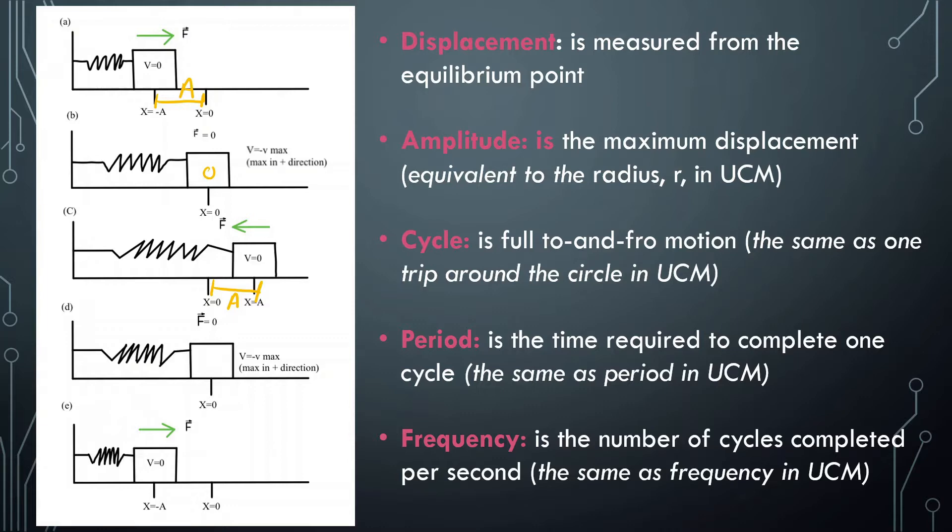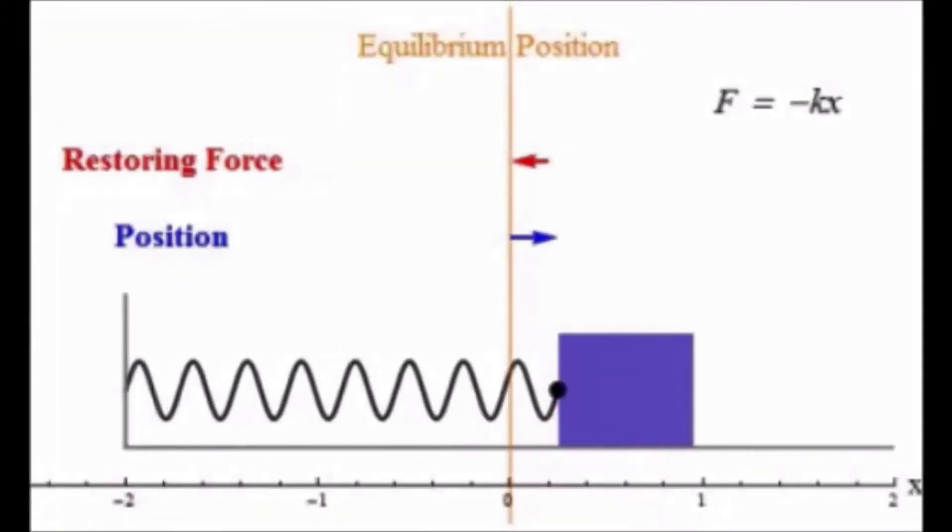Cycle is full to and fro motion, the same as one trip around the circle in uniform circular motion. Period is the time required to complete one cycle, the same as the period in uniform circular motion. Frequency is the number of cycles completed per second, same as frequency in uniform circular motion. So you're going to notice a lot of things that are very similar to uniform circular motion, which will be able to help us. If we remember uniform circular motion well, that will help us a lot with this chapter.